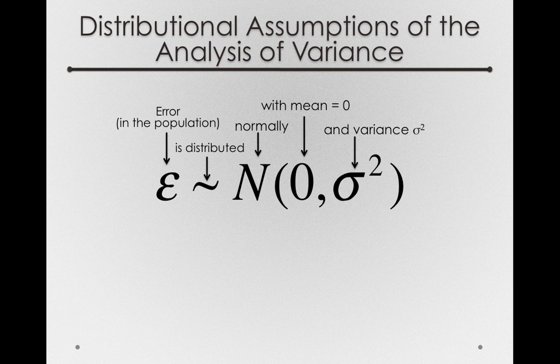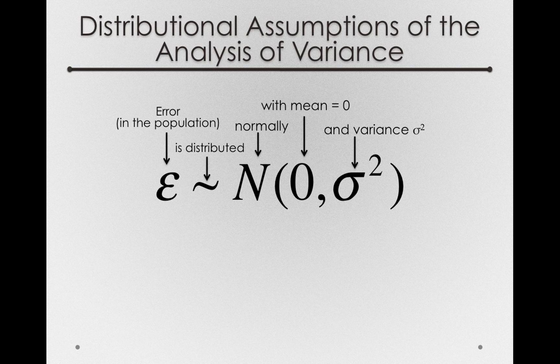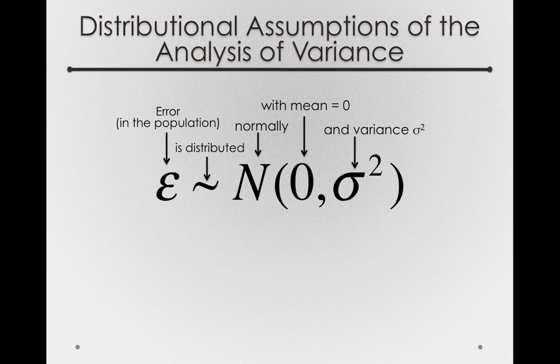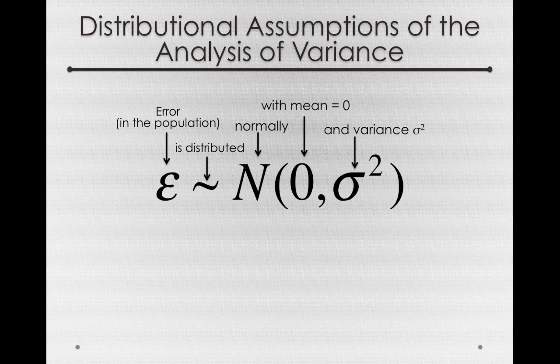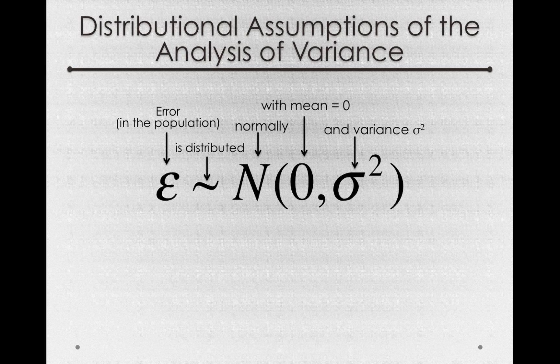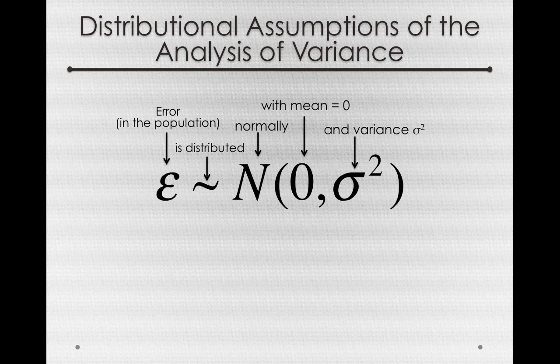Now I'll pause and say with a mean of zero is defined by the model. Error in our sample or the population is simply variability of individuals around their own group or around the prediction made by the model. So the mean for epsilon will be zero by definition. Our biggest concern will be normality and the variance of the epsilon terms.